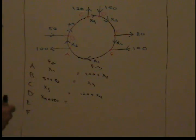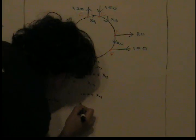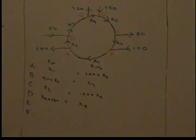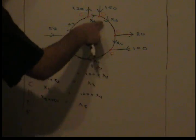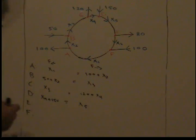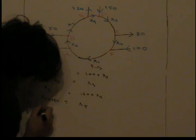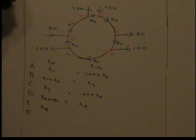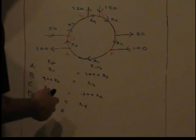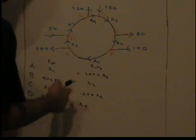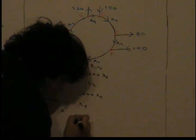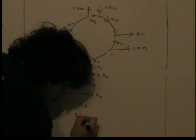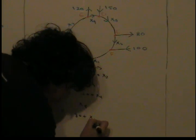Now to node E. What flows into node E looks like just x5. What flows out of node E looks like 80 plus x6.